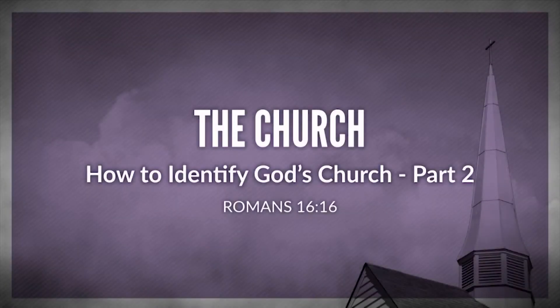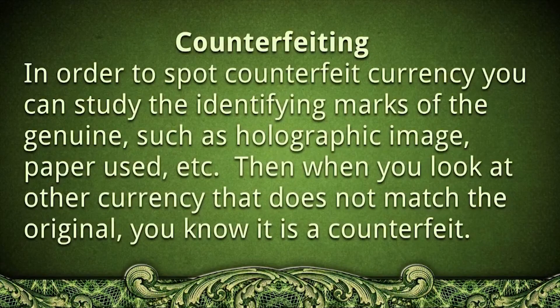We're looking at how to identify God's church. There are different identifying marks that you can see on God's church. We talked last time about counterfeit currency — in order to spot counterfeit currency, you examine and learn the identifying marks of genuine currency. Genuine currency has holographic images, it's printed on a certain type of paper, it may even have a certain smell. When you learn those identifying marks, you can examine counterfeit currency and spot the differences, and know that currency is fake if it does not bear the identifying marks of the genuine.